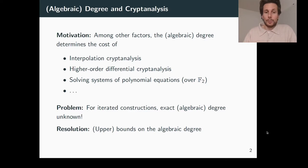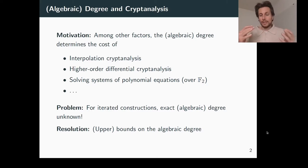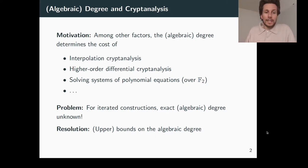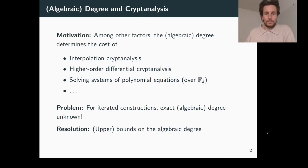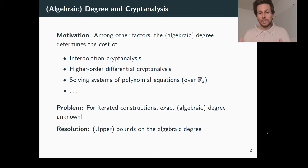I'm speaking of interpolation cryptanalysis, higher order differentials, and also equation solving over F2. The only problem is, in practice, we don't know the exact algebraic degree of fully-fledged cryptographic permutations — it just quickly becomes too expensive to evaluate the degree exactly. This is why we resort to establishing upper bounds on the algebraic degree rather than trying to evaluate it exactly.